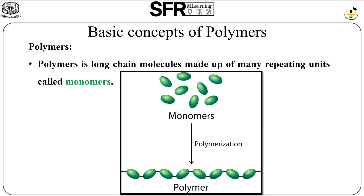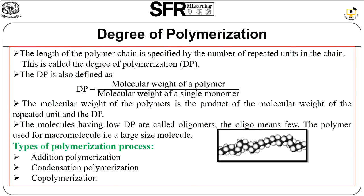The number of repeated units in a chain is called the degree of polymerization. The degree of polymerization is also defined as the molecular weight of a polymer divided by the molecular weight of a single monomer. The molecular weight of a polymer is the product of the molecular weight of the repeated unit and the degree of polymerization. Molecules having a low degree of polymerization are called oligomers.